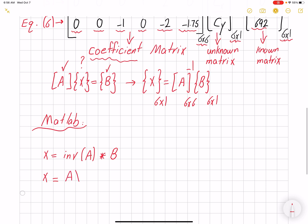The other approach would be x equals A backslash B. So this uses a Gaussian approach for solving an inverse of the matrix and it's more efficient.